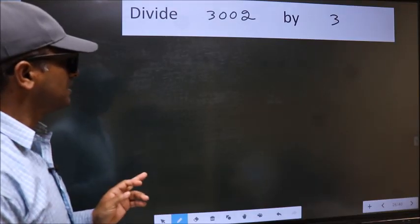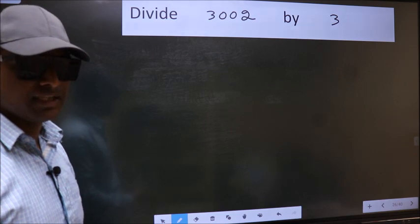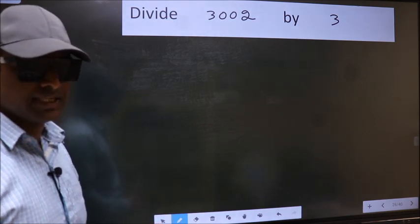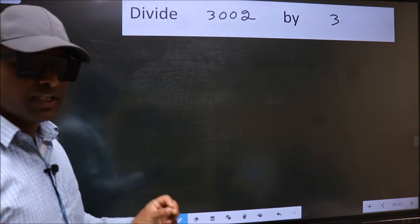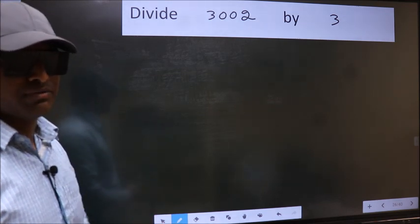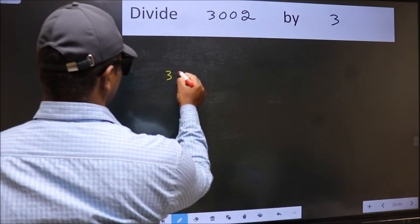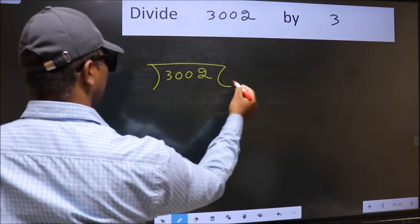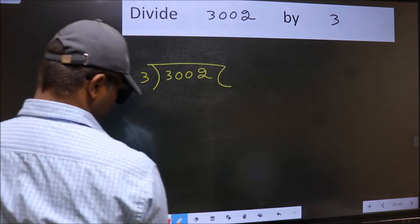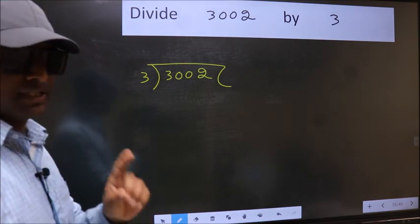Divide 3002 by 3. While doing this division, many do this mistake. What is the mistake that they do? I will let you know. But before that, we should frame it in this way: 3002 and 3 here. This is your step 1.